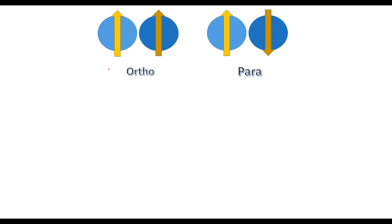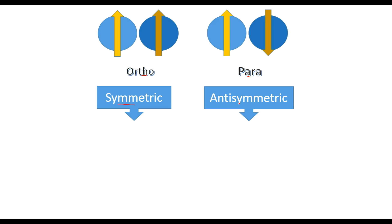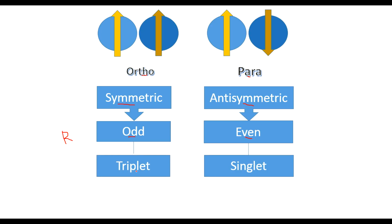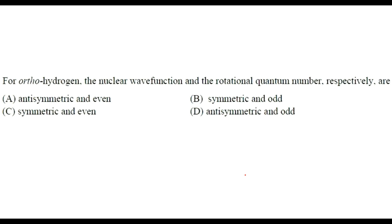In summary: ortho hydrogen has a symmetric nuclear wave function and odd rotational quantum numbers, and is a triplet state. Para hydrogen has an anti-symmetric nuclear wave function and even rotational quantum numbers, and is a singlet state. For our question about ortho hydrogen, the nuclear wave function is symmetric and the rotational quantum number is odd, so the answer is symmetric and odd.